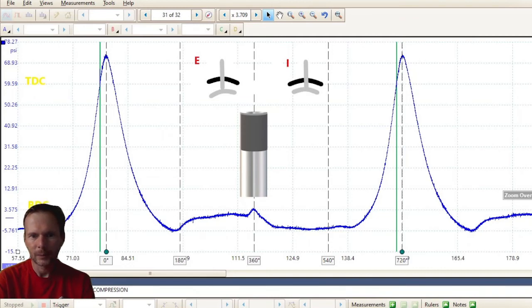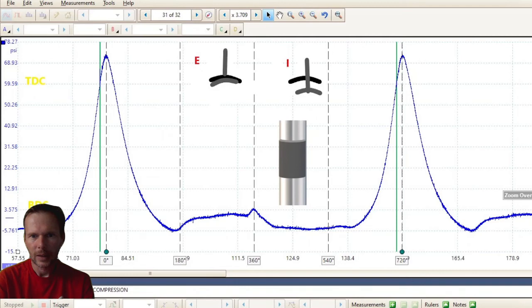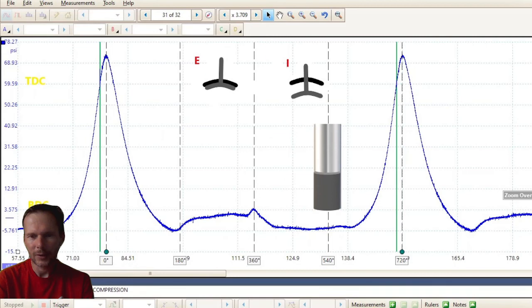Alright, moving on. We've got the intake stroke. Intake valves are open and the exhaust valve shut. Piston's moving down. We create a negative pressure, so vacuum.